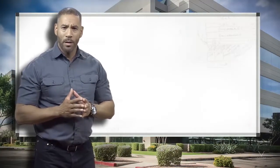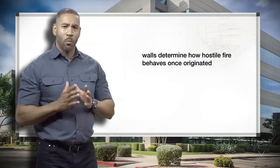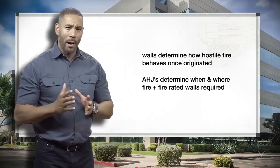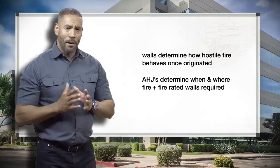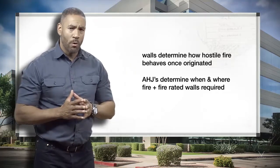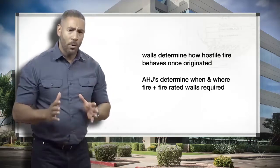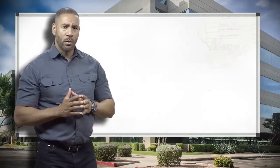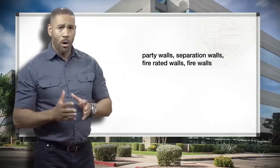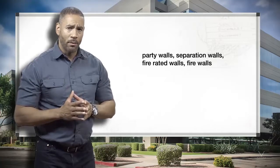From a fire protection standpoint, the walls determine how a hostile fire behaves once originated. The AHJs determine when and where fire and fire-rated walls are required, but the owner may request even more fire-rated construction. There are many versions of interior building walls: party walls, separation walls, fire-rated walls, fire walls, etc. Each one will provide another level of protection.